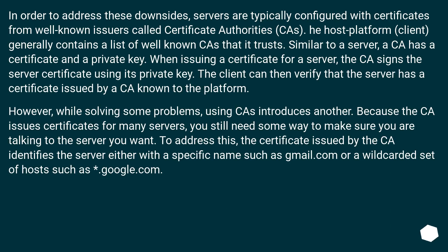In order to address these downsides, servers are typically configured with certificates from well-known issuers called certificate authorities (CAs). The host platform, or client, generally contains a list of well-known CAs that it trusts. Similar to a server, a CA has a certificate and a private key. When issuing a certificate for a server, the CA signs the server certificate using its private key. The client can then verify that the server has a certificate issued by a CA known to the platform.